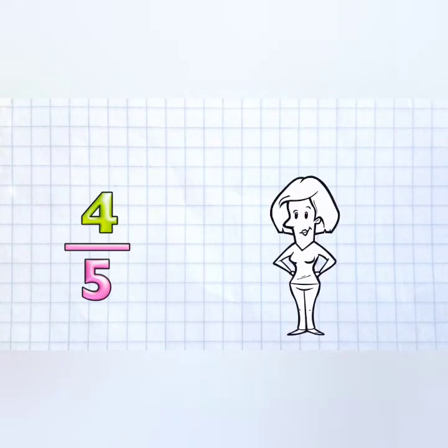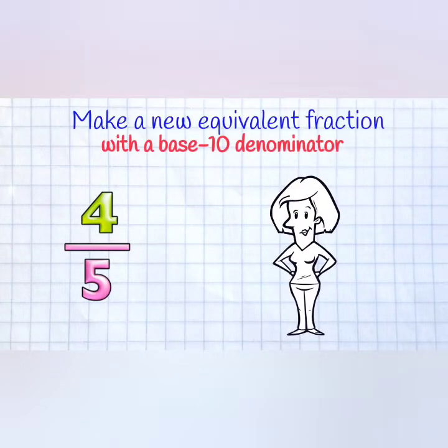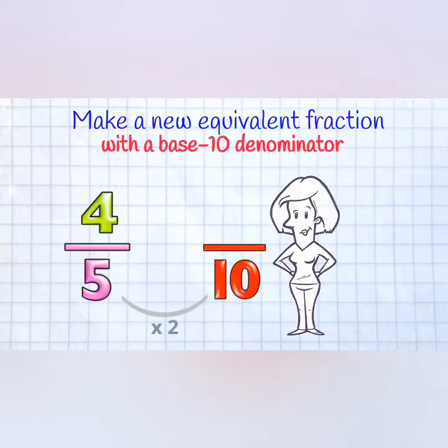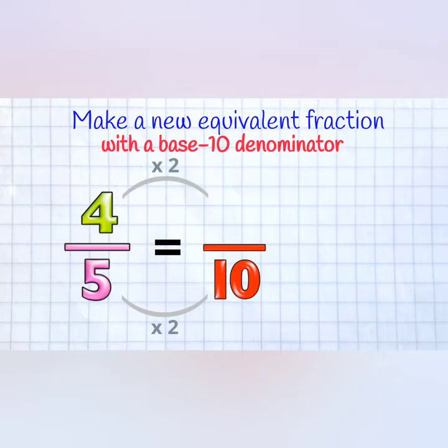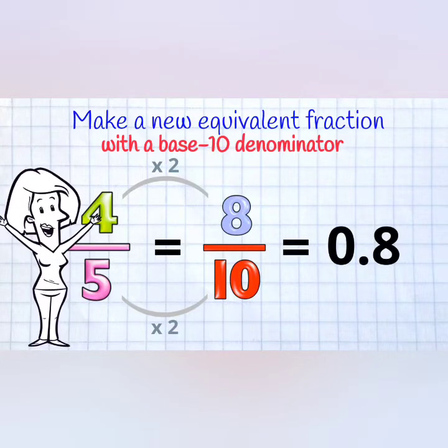4 fifths. We have a denominator of 5. We can turn that into a denominator of 10. We just multiply by 2, and we do the same up top to make our equivalent fraction: 8 tenths. And of course, as a decimal, that's 0.8! Not hard at all!